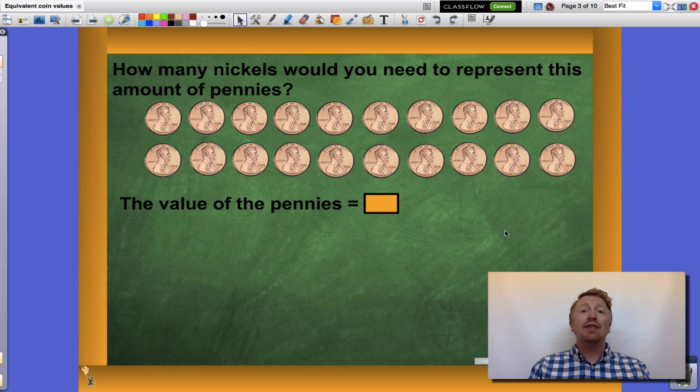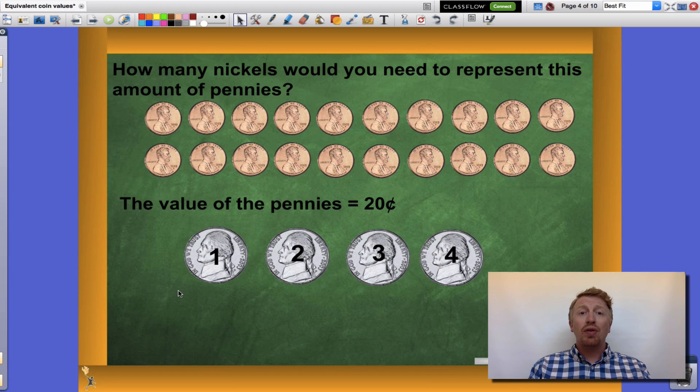I have twenty pennies, each worth one cent a piece, for a total of twenty cents. How many nickels would I need to reach twenty cents? Nickels are worth five cents a piece. I would need four nickels to reach twenty cents: five cents, ten cents, fifteen cents, twenty cents. Twenty pennies is equivalent to four nickels.